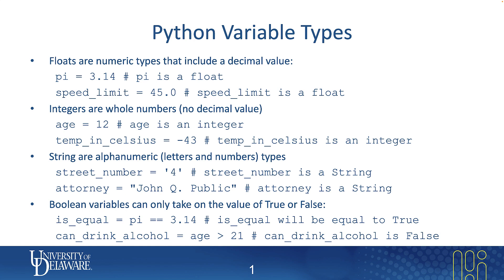This format can be a little confusing, but it's an interesting way of working with booleans in Python. In the second example, can_drink_alcohol will be assigned True or False depending on the right side of the single equal sign. We're checking whether age is greater than 21, which is the drinking age in Delaware. Since age was assigned 12 above, 12 is not greater than 21, so can_drink_alcohol gets the value False.